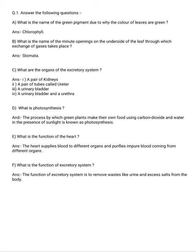So let us start from question number one. What is the name of the green pigment due to which the color of the leaves is green? The answer is chlorophyll.